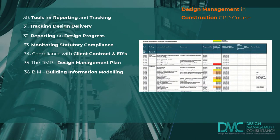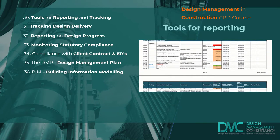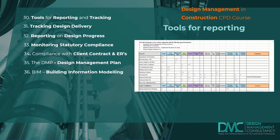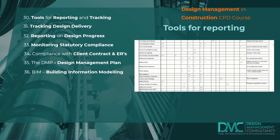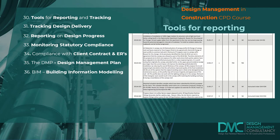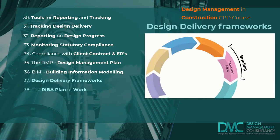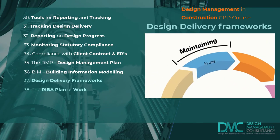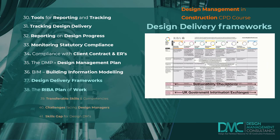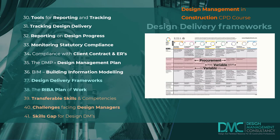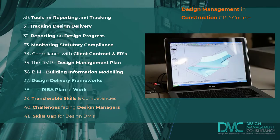The next seven modules cover the all-important tools for reporting on design progress and tracking design delivery. There are trackers, matrices, schedules, and other tools, which all monitor change control and compliance with the contract and statutory regulations. We also explore the design delivery frameworks with a particular emphasis on the RIBA plan of work. And finally, there are chapters covering transferable skills, and those skills perhaps missing for anyone entering the design management profession.